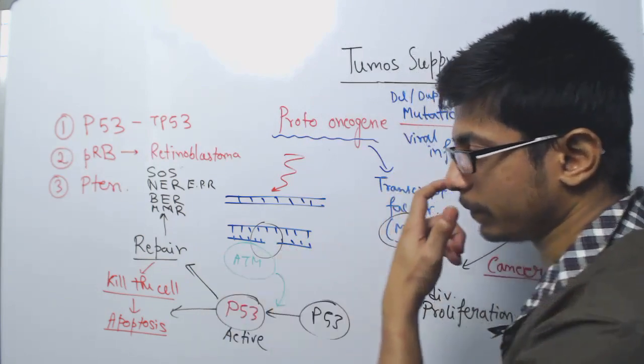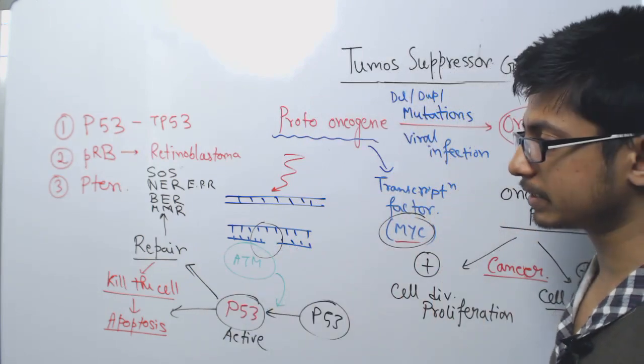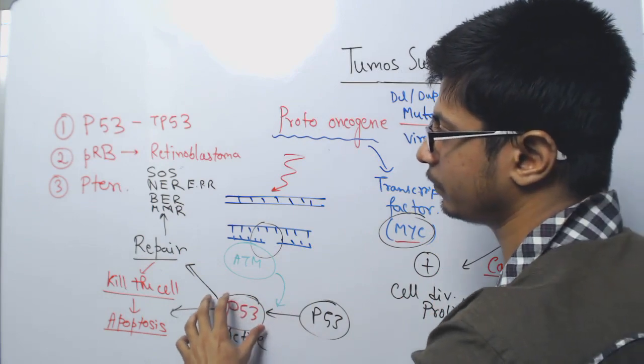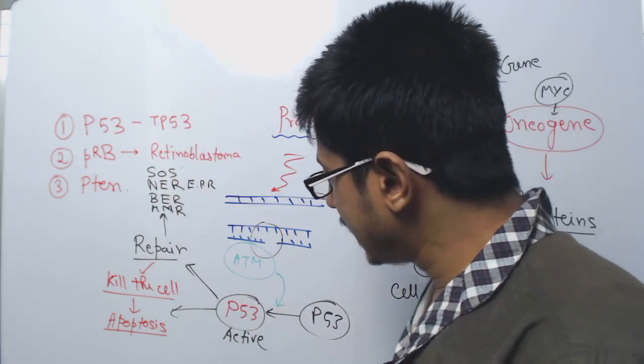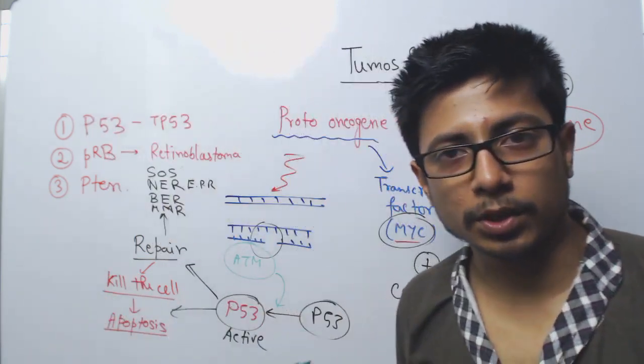This is the job of P53, controlling everything inside the cell. This is one example of a tumor suppressor protein. This is how the whole process works. If there is any sort of problem, the tumor suppressor gene will come and rescue the cell from that.